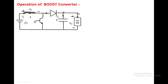This is the input voltage, this is the inductor, this is the positive direction of the voltage across the inductor, and this is the positive direction of the inductor current. This is the switch — the switch is on whenever we apply the base voltage to the switch; if we withdraw the base voltage, the switch will be off. This is the diode, this is the capacitor connected across the load, this is the positive direction of the load current, and this is the positive direction of the voltage across the capacitor, which is the same as the voltage across the load because both are connected in parallel.